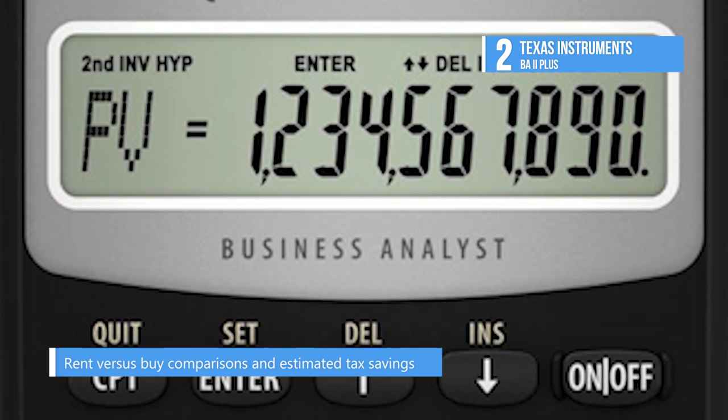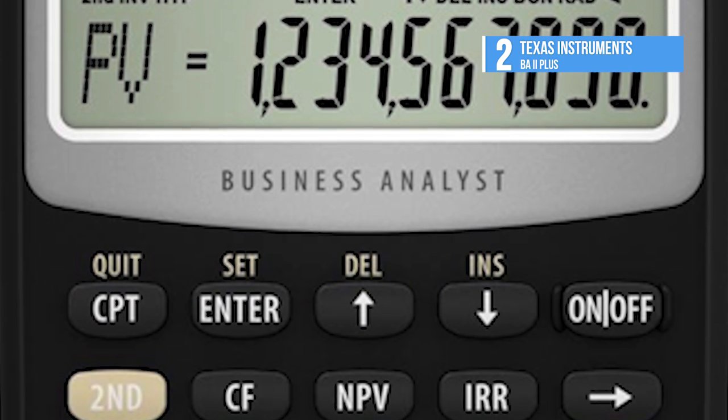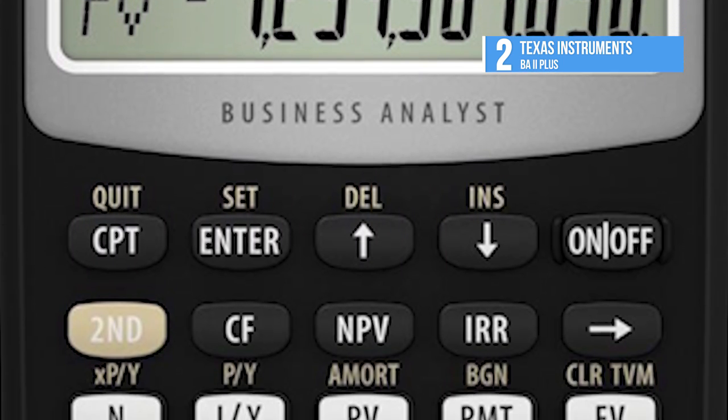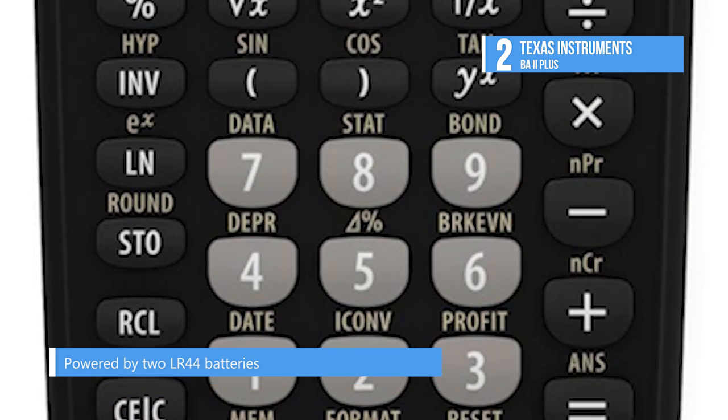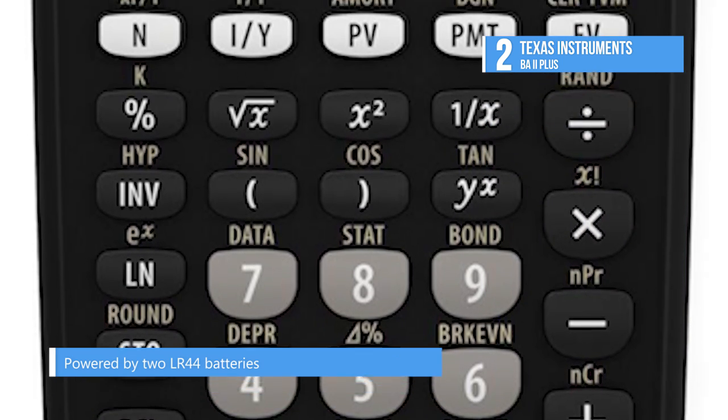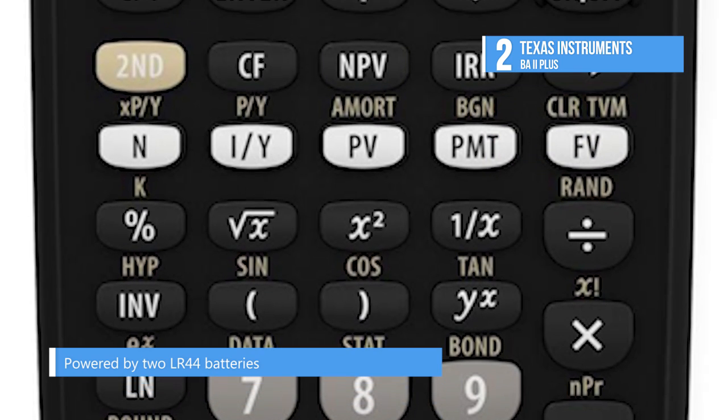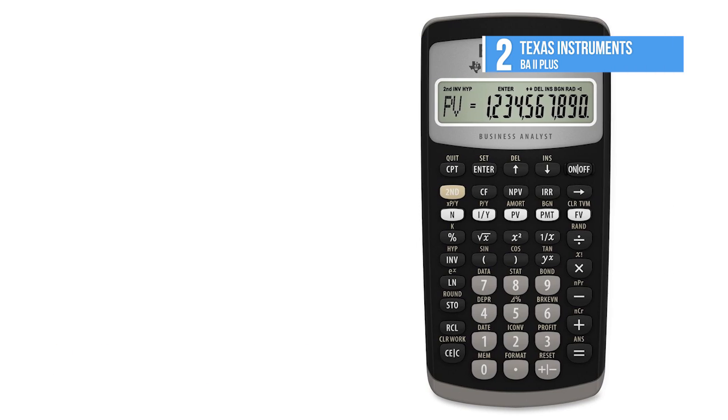The worksheet mode includes tables for amortization, bond, depreciation and compound interest, built-in memory for storage of previous worksheets and it can perform cash flow analysis and advanced list-based statistics and a slide case included to protect the screen.